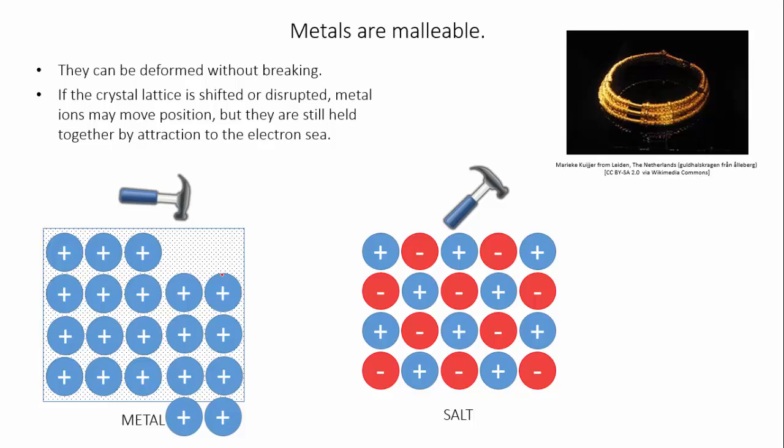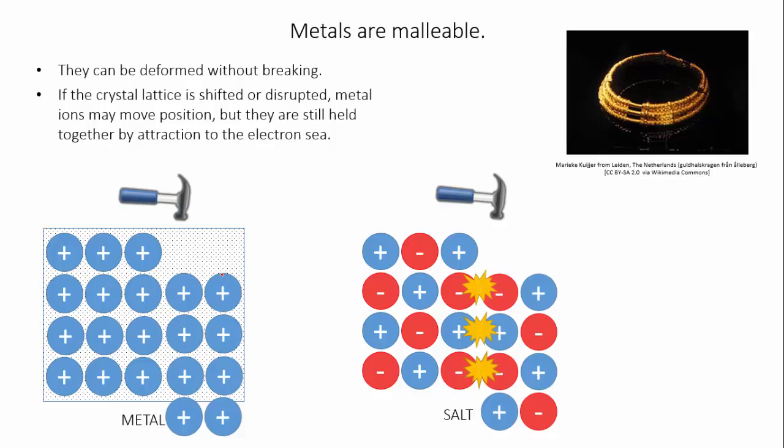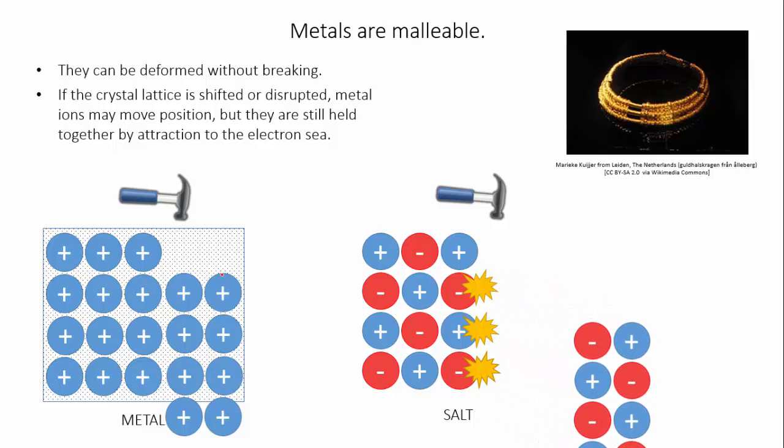This is in contrast to the ionic lattice, which relies on the attraction of neighboring oppositely charged ions. If an ionic lattice is deformed so that these oppositely charged ions are no longer neighbors, the electrostatic attraction is lost.